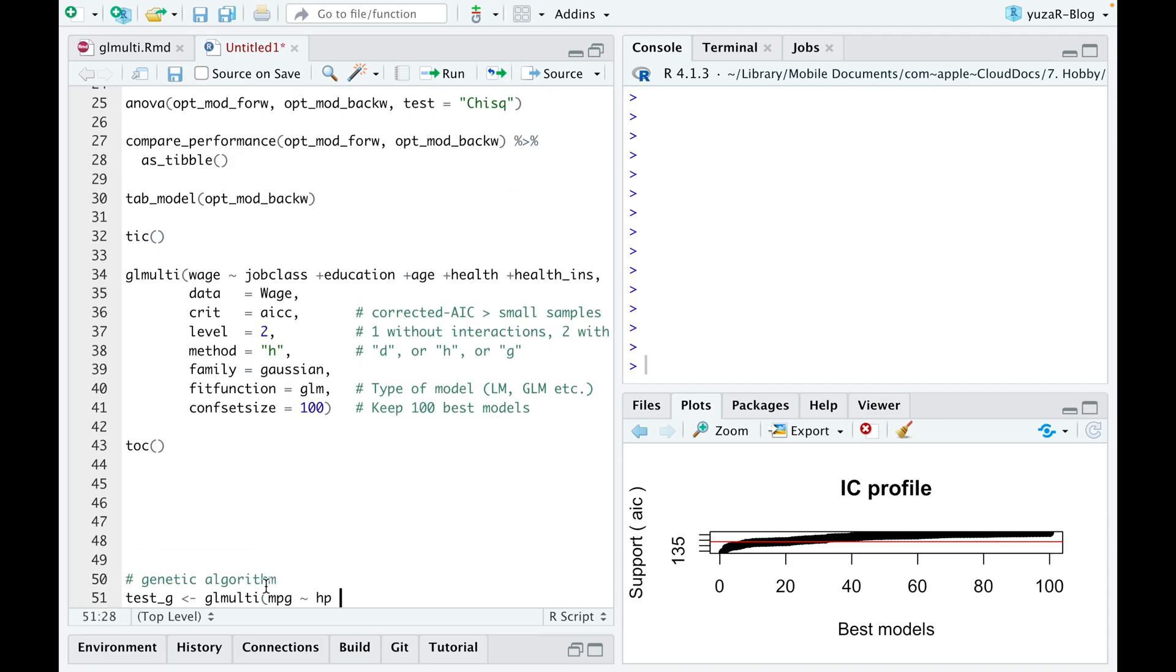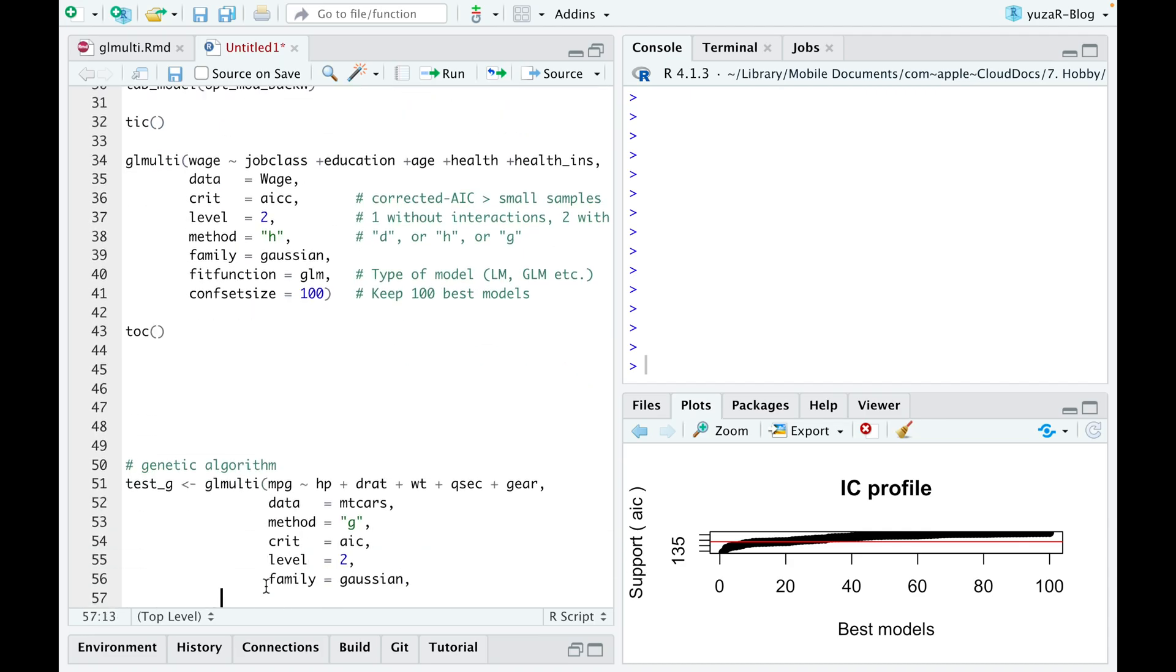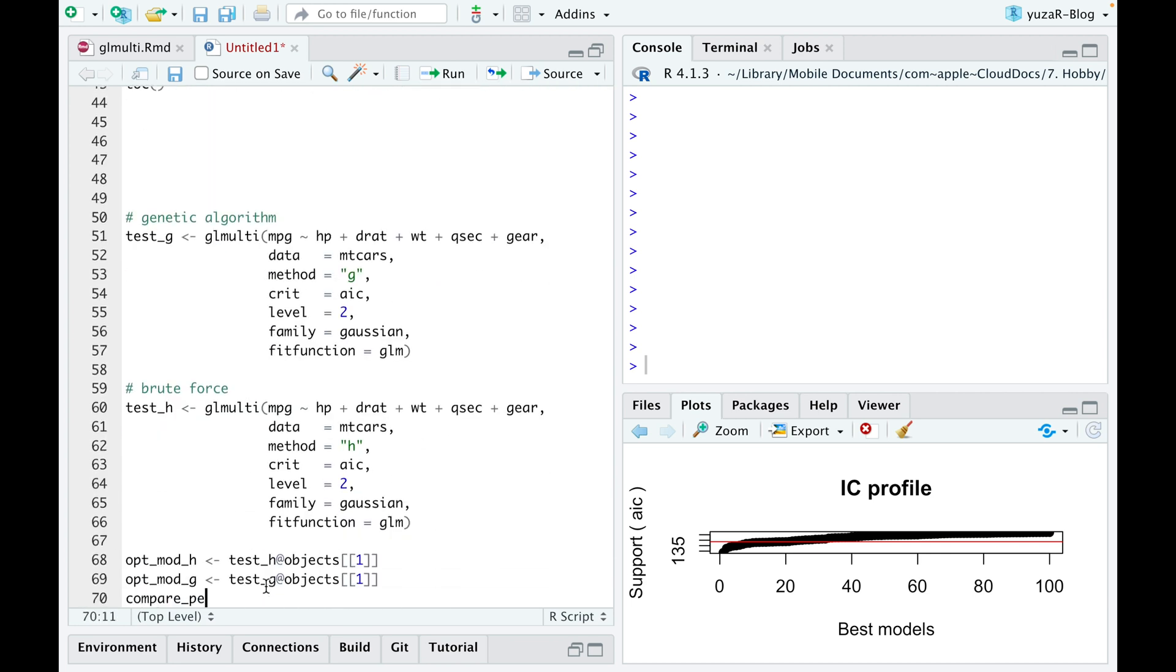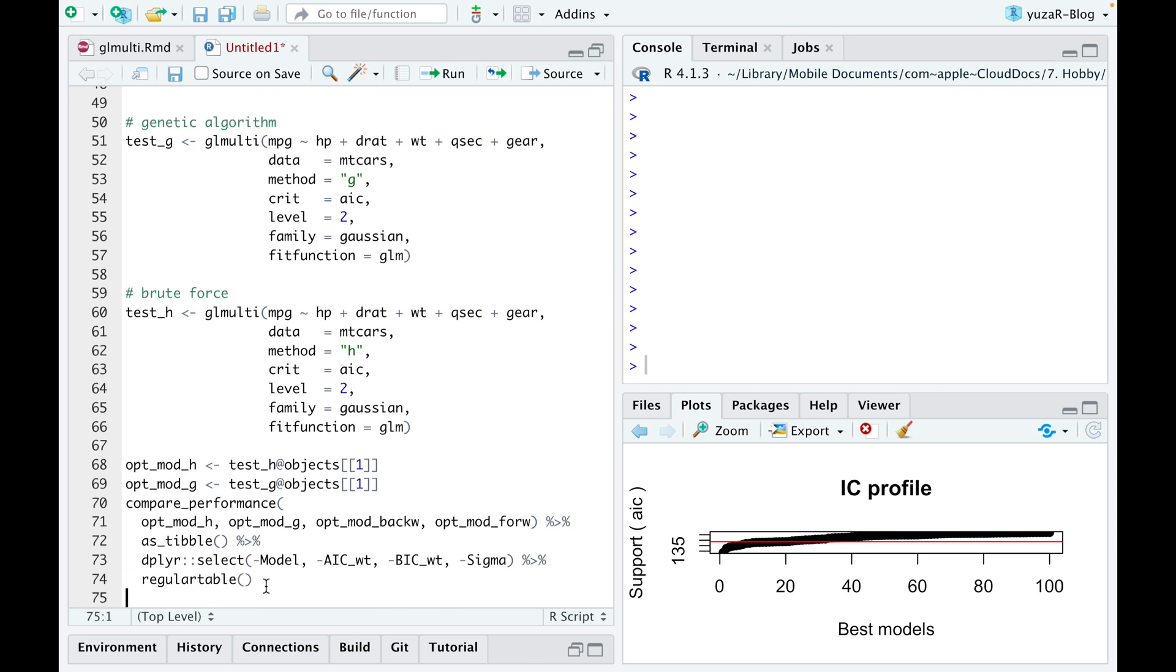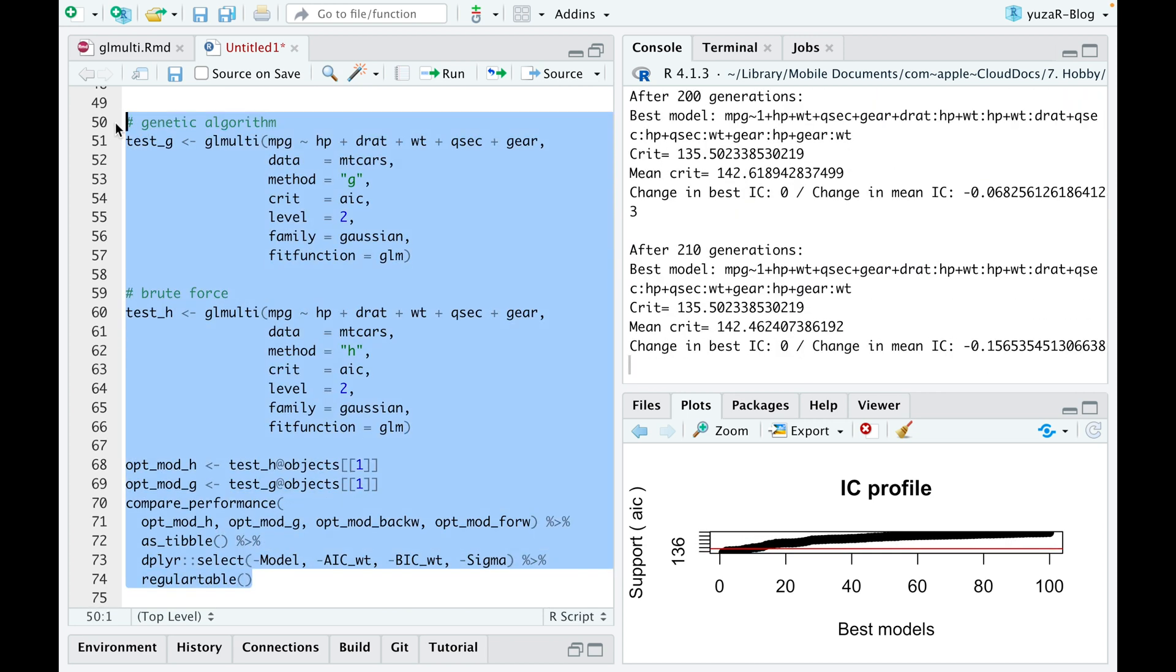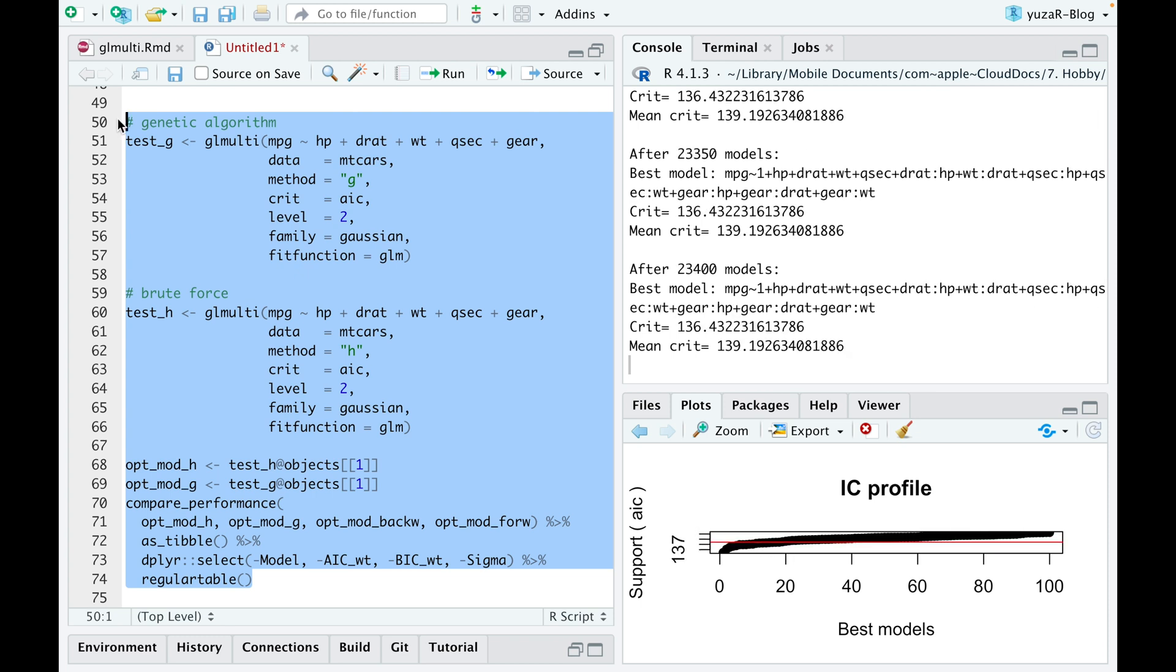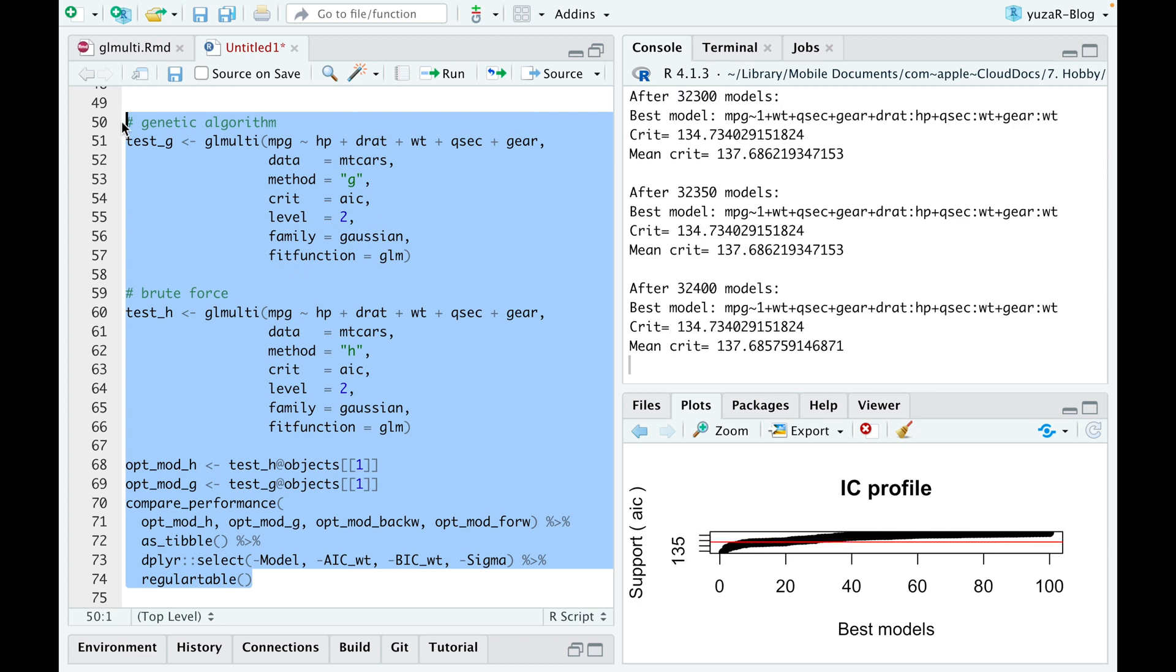By the way, remember in the beginning of the video I said that stepwise selection is not the best method, implying the glmulti approach is better. Well, let's compare the results of exhaustive and genetic algorithms to the results of the forwards and backwards selections, and see which is a truly best model.